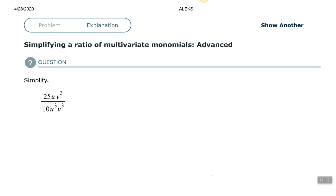So same concept here. Now we have 25 over 10, u to the first over u to the third, v to the third over v to the third. So the 25 over 10. Now, remember, you just simplify that. You find a common factor that goes into both of those numbers. And that's how you simplify the 25 over 10.